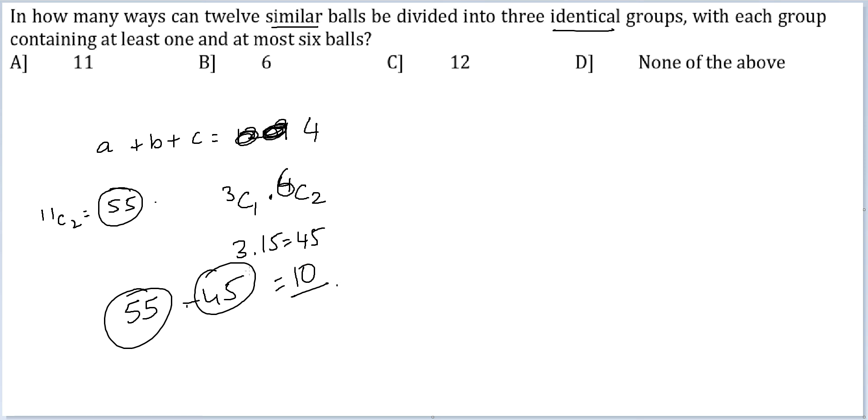In these 10 cases, you also have cases where A and B could be identical or A and C could be identical. Can I have 1, 1, 10? Not possible. Can I have 2, 2, 8? Not possible. 3, 3, 6? This would have been counted 3 times, but it is supposed to be counted only once. Then 4, 4, 4. It would have been counted once, should be counted only once. That is fine. So you need to subtract 2 for this case.